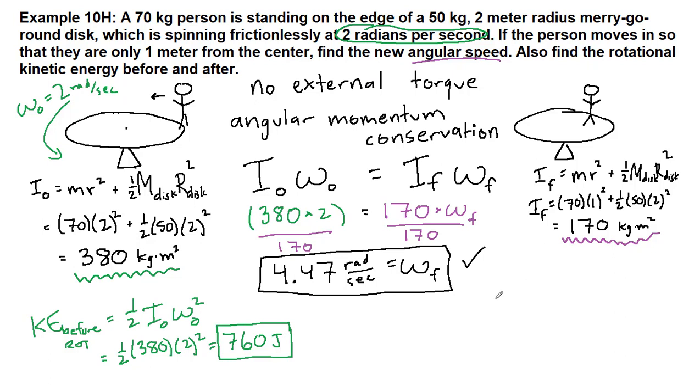The kinetic energy after - and this is the kinetic energy of rotation - is one half times the final moment of inertia times the final angular velocity squared. So we have one half times 170 times 4.47 squared. We plug all that into our calculator and we get a much higher value.